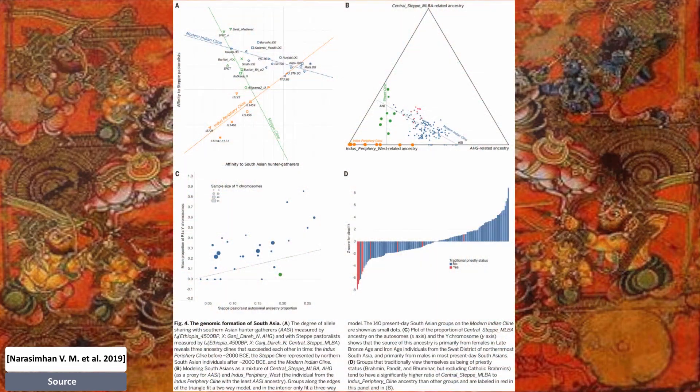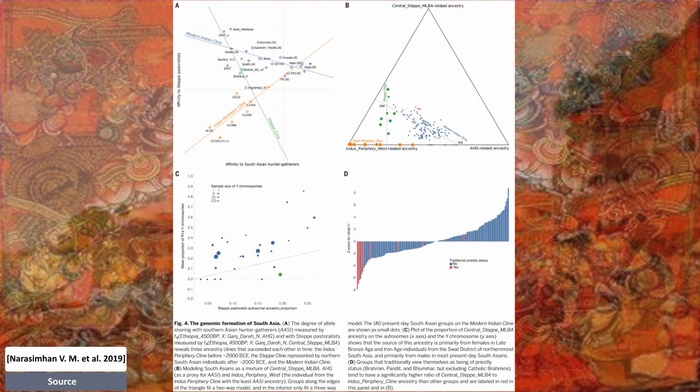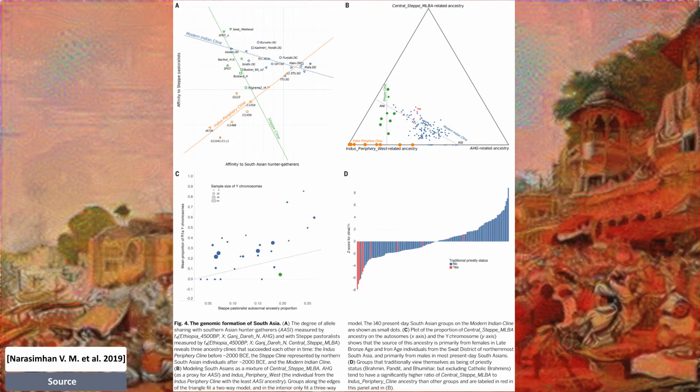Ancient South Indian is mainly a mixture of Iranian farmers mixed with South Asian hunter-gatherers, and Ancient North Indian is a mixture of the latter and the Indo-European steppe cline. The steppe ancestry is mainly male and upper caste — groups that traditionally view themselves as being of priestly status, like Brahmins, that tend to have a significantly higher ratio of central steppe ancestry. The existence of South Asian hunter-gatherers with no west-Eurasian admixture is inferred, modelling a split upon the initial population of Eurasia along the south Himalayan path into South Asians, East Asians, and Australasians.